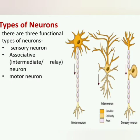There are basically three types of neurons: sensory neuron, associative neuron (also called intermediate or relay neuron), and motor neuron. Sensory neurons carry messages from receptors toward the central nervous system. Relay/inter neurons interpret and process the message. Motor neurons carry the processed message back from the inter neuron and deliver it to the effectors. So their functions are different.